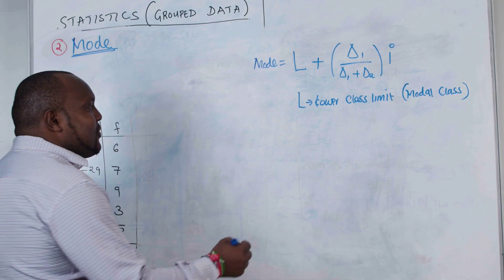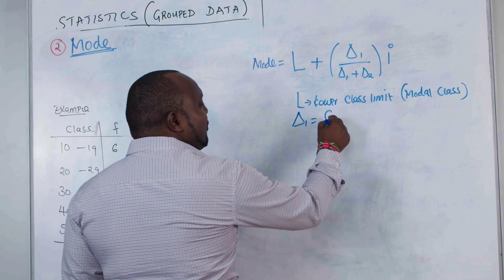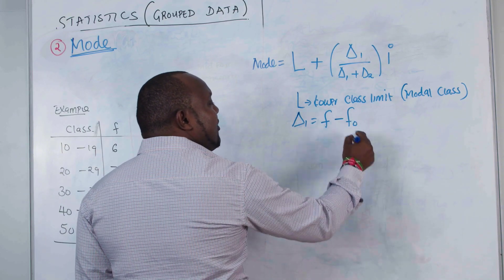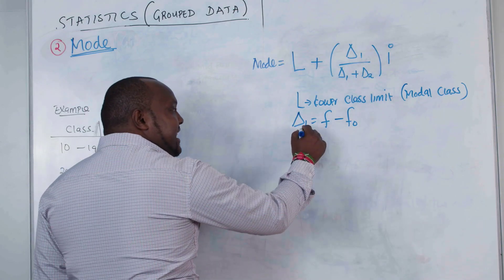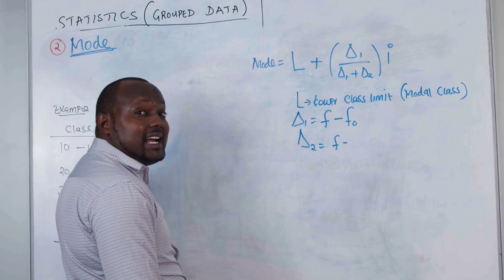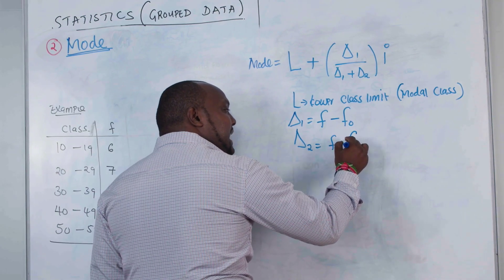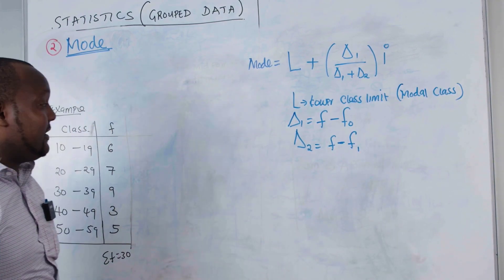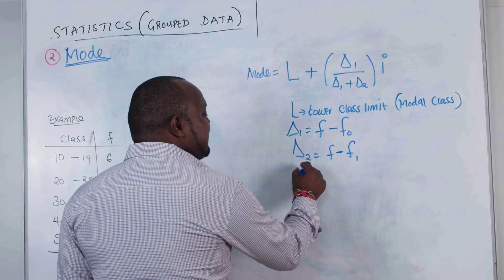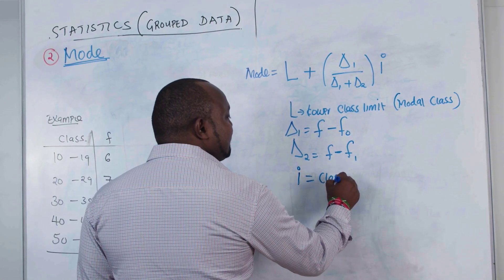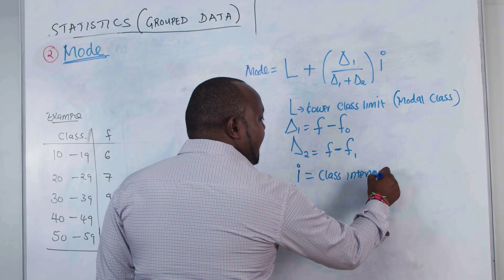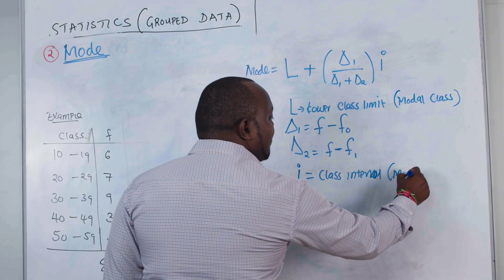Δ1 is the frequency of the modal class minus the frequency of the previous class. Δ2 is the frequency of the modal class minus the frequency of the class below it. And I is the class interval of the modal class.